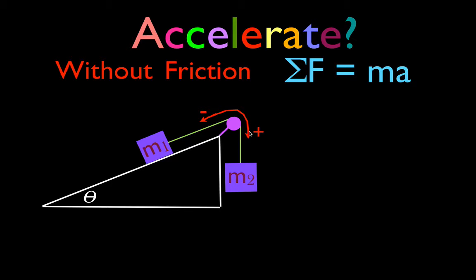Now if we're going to have acceleration in either direction, we need to have an unbalanced force. Unbalanced forces cause acceleration. If we want to see if we have unbalanced forces, we should draw in all the forces acting on M1 and M2.